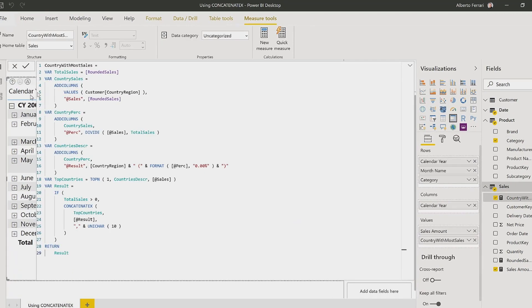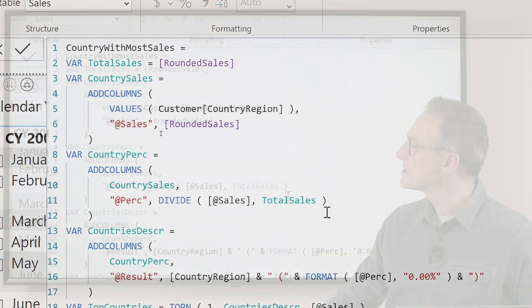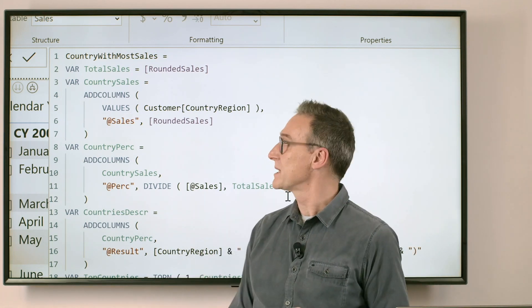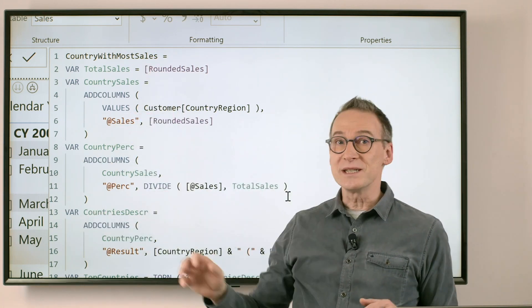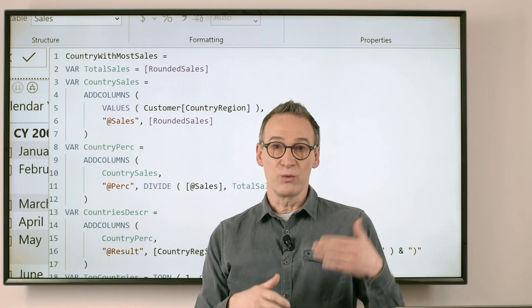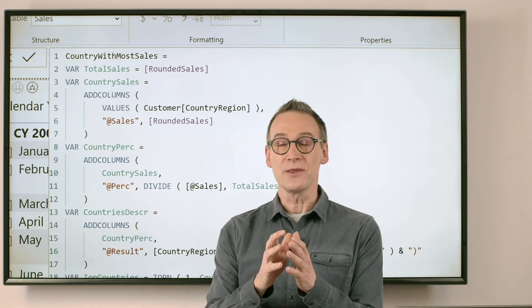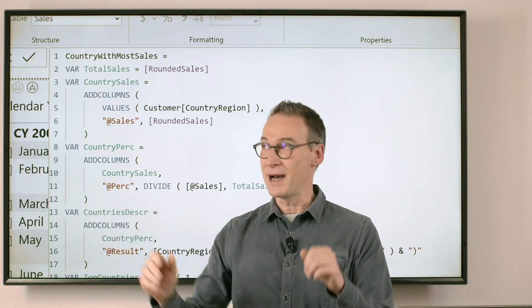So this is country with most sales. It looks like a very complex piece of DAX. Actually, it's just long. It's not complex. What we want to do is find the top seller and sort them by their share on sales. So we start computing the total sales, the grand total of sales in that month.